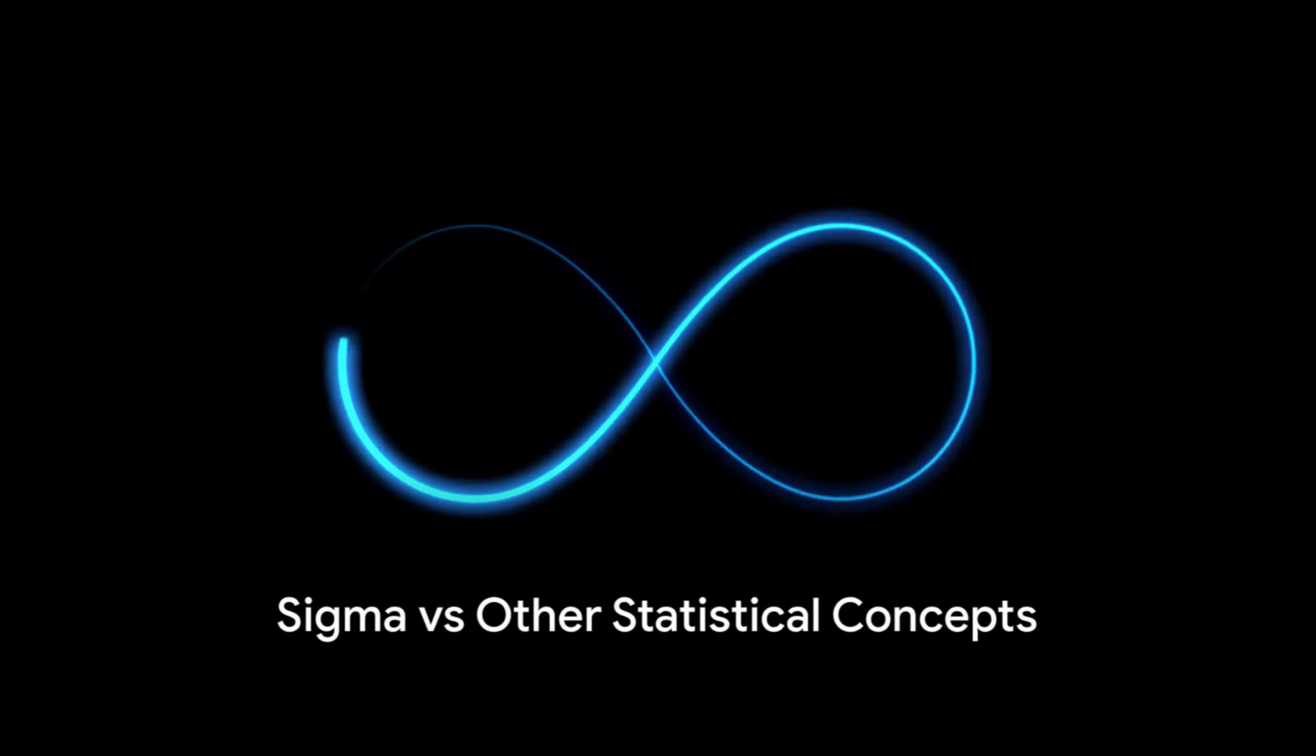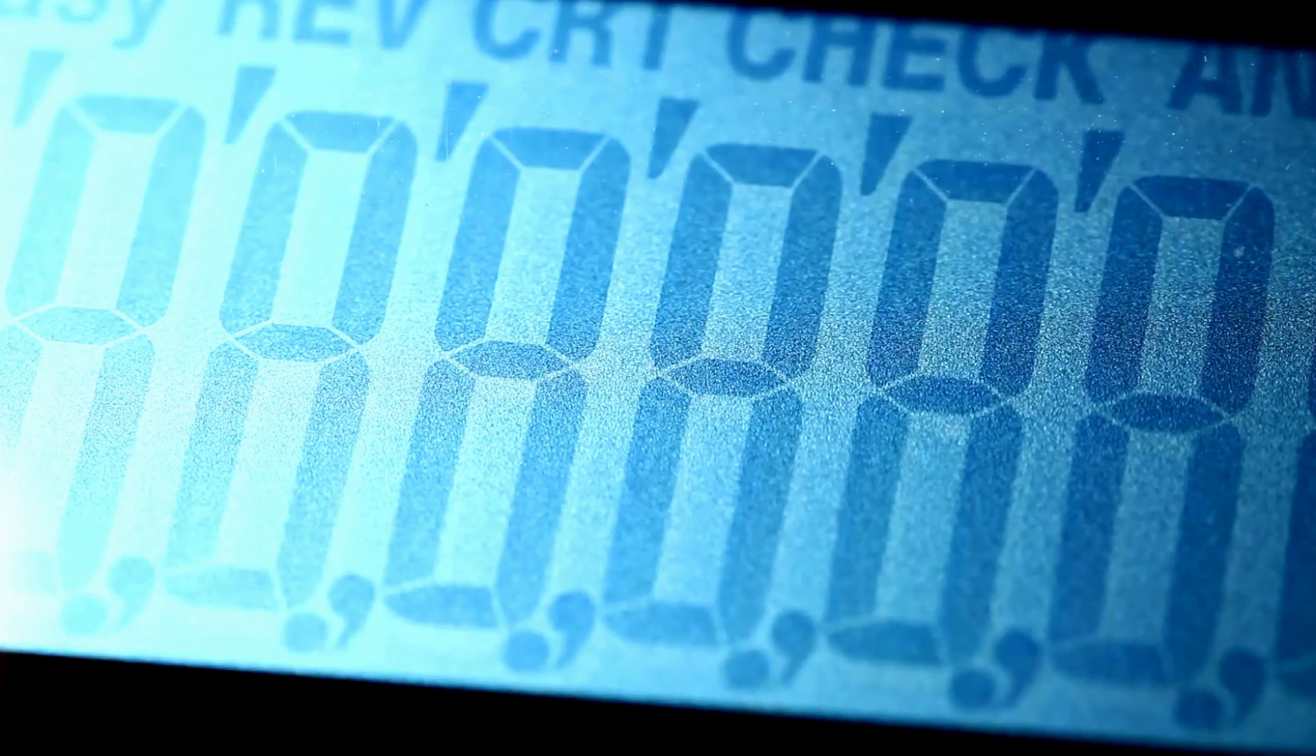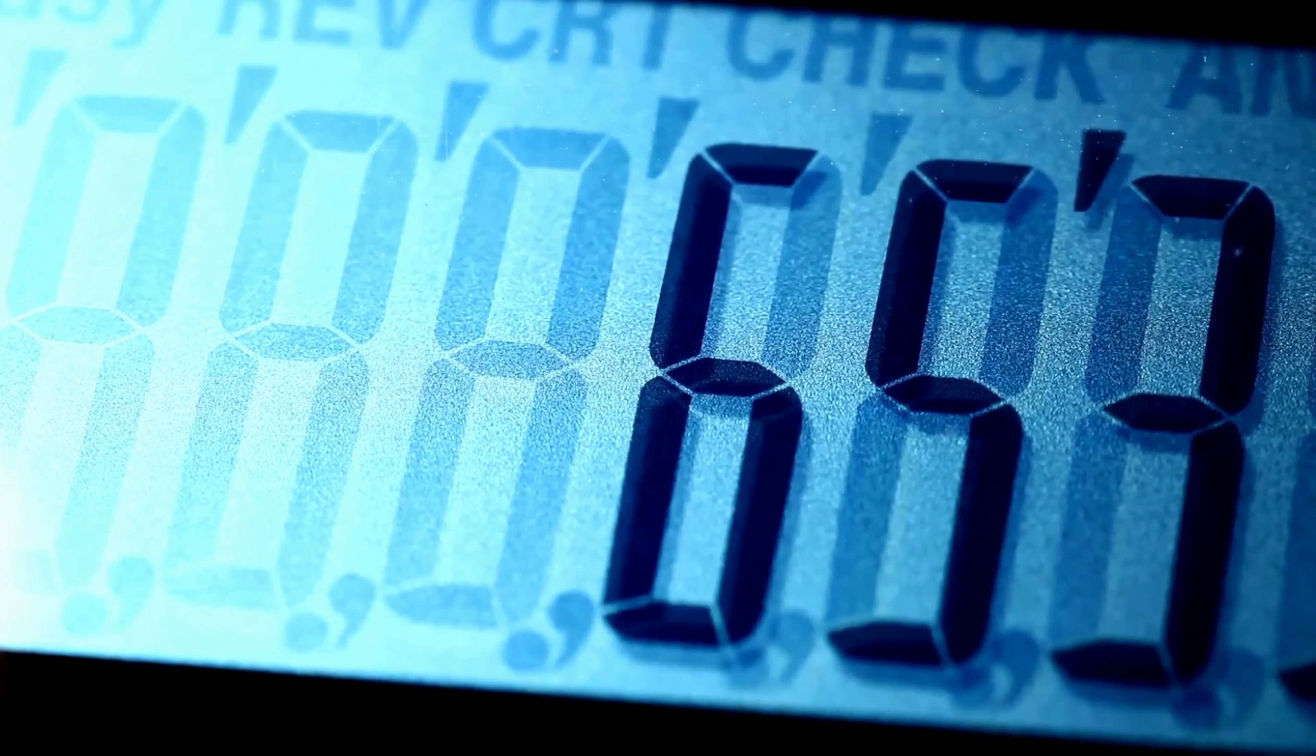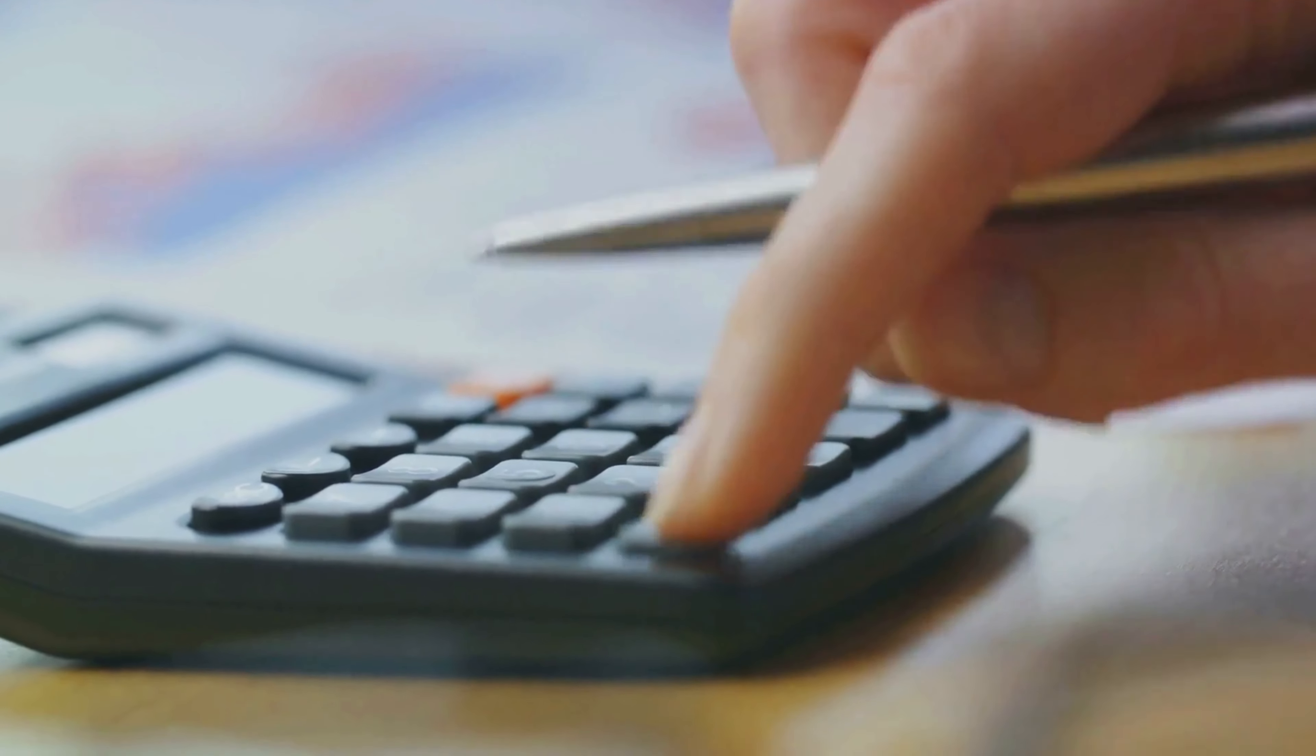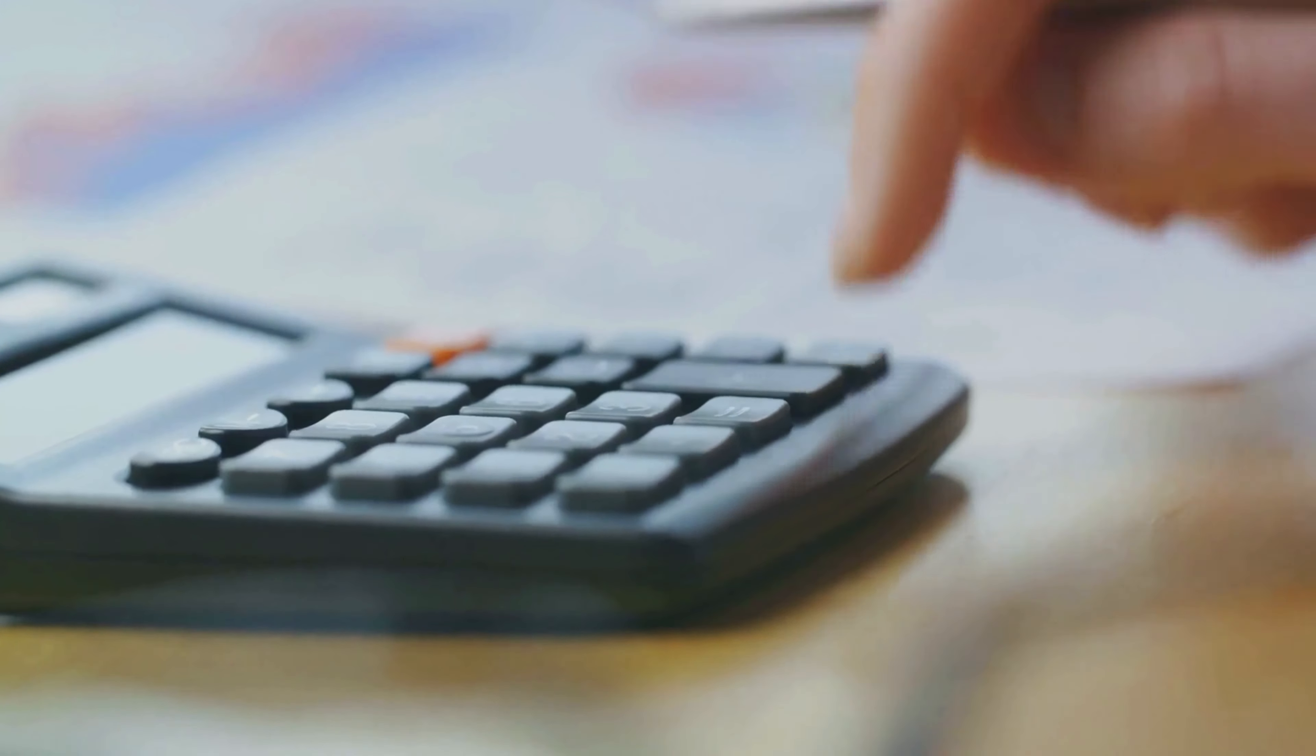How does sigma hold up when compared to other statistical concepts? As we delve deeper into the realm of statistics, it's essential to understand how different concepts intersect and diverge. Today, we're pitting sigma against other statistical stalwarts, the mean, median, and mode. Let's start with the mean, or the average. This value is computed by adding up all the data points and dividing by the number of data points. The mean is a useful measure of central tendency, but it can be misleading if our data set has outliers. Extreme values on either end of the scale can pull the mean away from the center of the data.